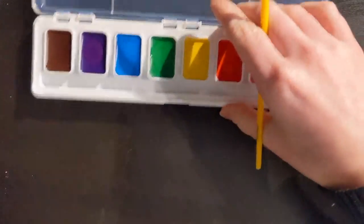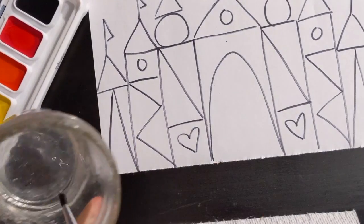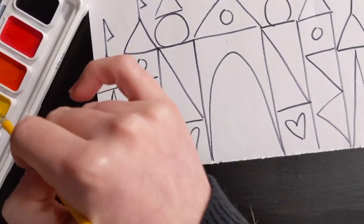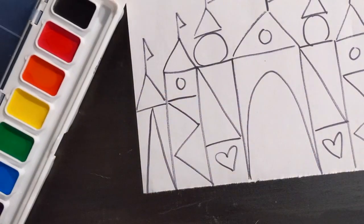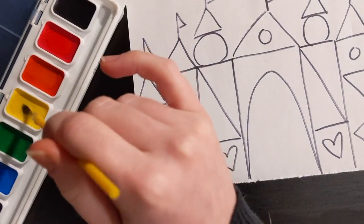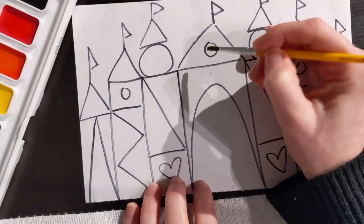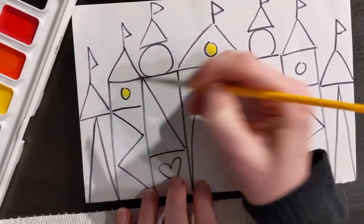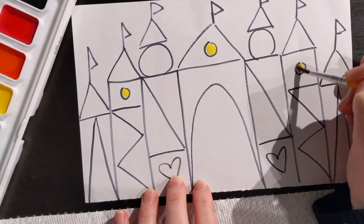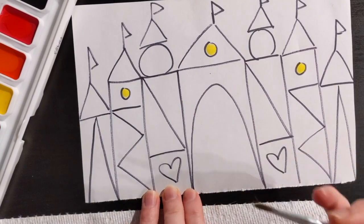So I'm gonna use yellow first. I'm gonna get some water on my brush, get some paint on my brush, make sure my brush is nice and wet because we are using watercolors - we need water in order to use watercolors. So now I'm just going to add some paint, add some yellow where I want to add yellow.